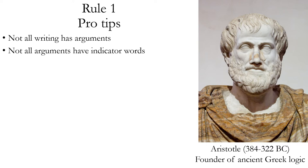Another tip: not all arguments have indicator words. Sometimes you'll have words like 'therefore' or 'thus' for the conclusion and 'because' or 'since' for premises, but you don't always have that. If there are no indicator words, it doesn't mean there's no argument — look for the logical relations between the propositions. If some of the propositions can be used as proof of or evidence for another, you probably have an argument, though the exception would be reports of information where a logical link exists but the passage just isn't making that inferential move.